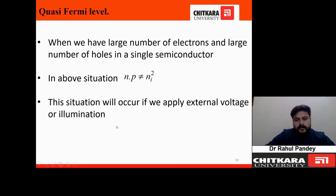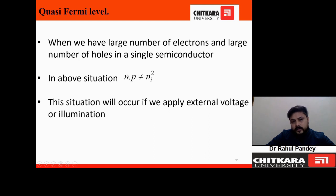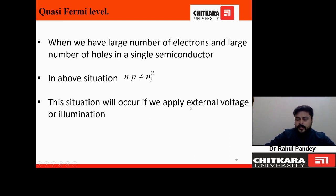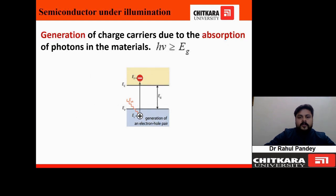This situation changes if we trigger the semiconductor with some external mechanism. A new quasi-Fermi level concept arises when there are large numbers of both electrons and holes simultaneously. In this situation the mass action law fails — the product of electron and hole concentrations is no longer equal to n_i². This condition usually occurs when we apply external bias or illumination.